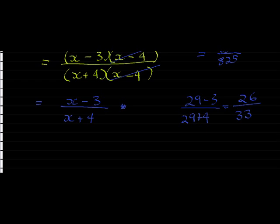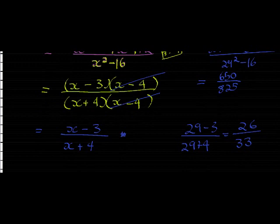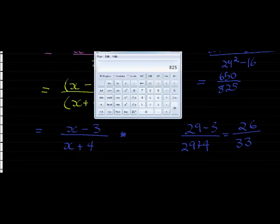But let's see if we get the same answers using our calculator. 650 divided by 825, and I hit 0.787878.